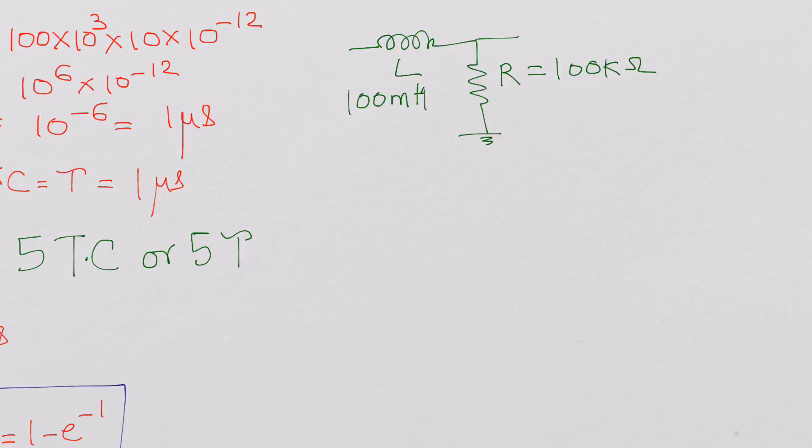So in the RL circuits, the time constant TC is L over R. Why did we get this?